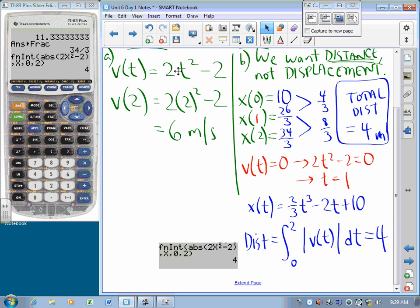And if we were taking a calculator active exam, it would be perfectly acceptable for you to write integral 0 to 2, absolute value V of t, because V of t is already decided for us, equals 4. Okay? Okay.